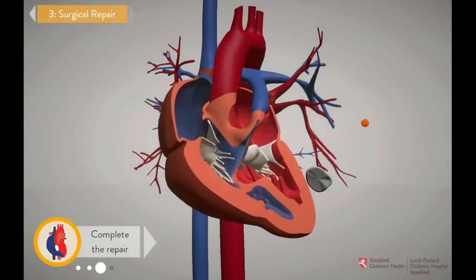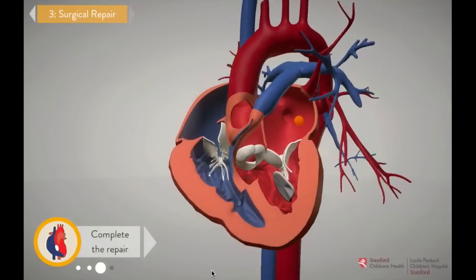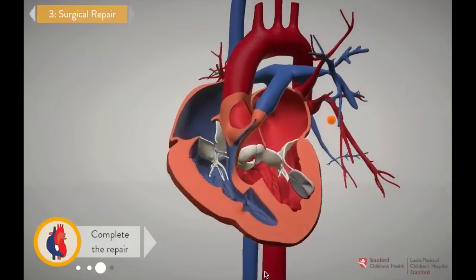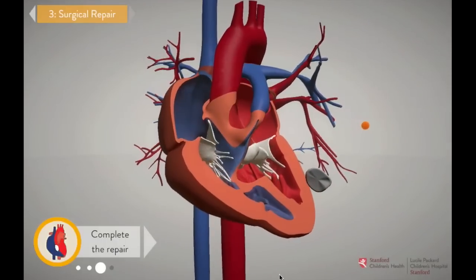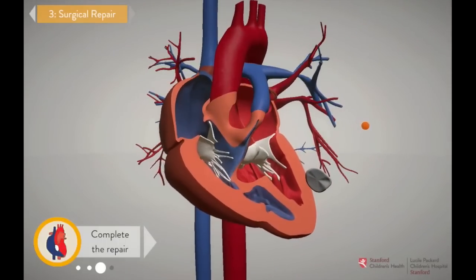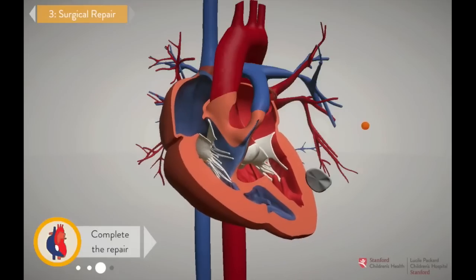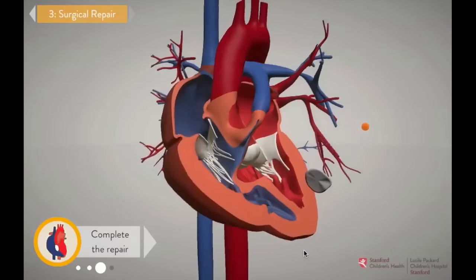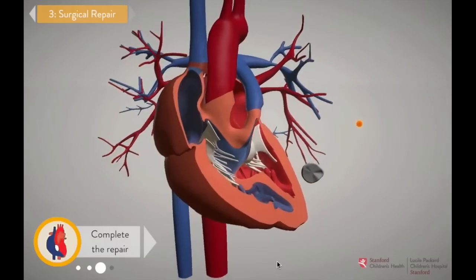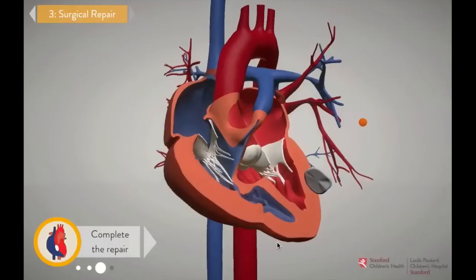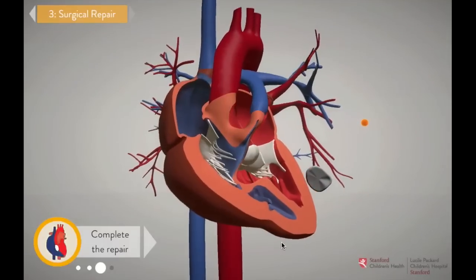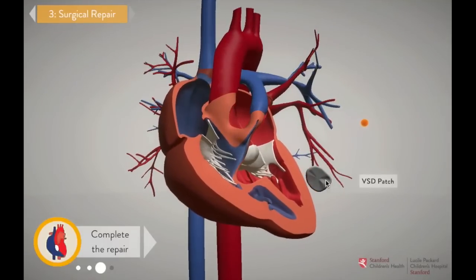Once we've done the unifocalization, we do a test in the operating room to see if blood is flowing well and at low pressure through the newly reconstructed pulmonary artery. If so, we close that hole in the heart so deoxygenated blood can no longer escape to the wrong side of the heart. Grab the patch and close the VSD.